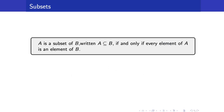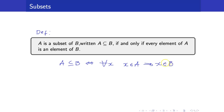Let us recall the meaning of subsets. We say that a set A is a subset of B if and only if every element of A is an element of B. In symbolic form, A ⊆ B if and only if for all x, if x is in A, then x must also be in B. We can also write this as: for all x in A, x is in B.